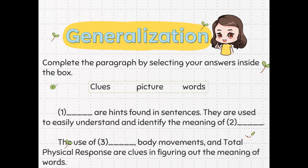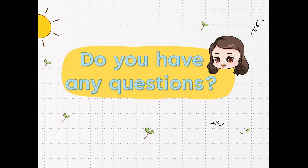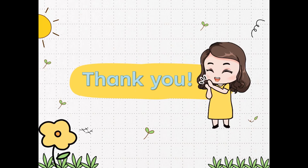Complete the paragraph by selecting your answers inside the box. Clues are hints found in sentences. They are used to easily understand and identify the meaning of words. The use of pictures, body movements, and total physical response are clues in figuring out the meaning of words. Do you have any questions? Thank you so much for watching! Bye bye.